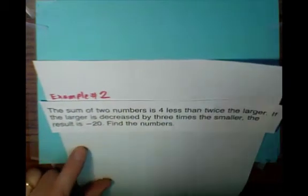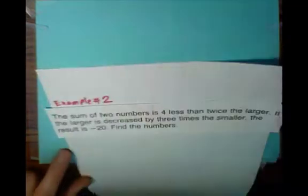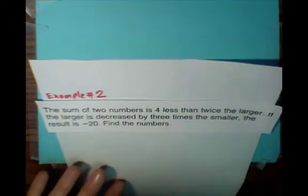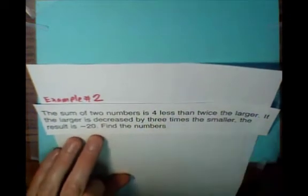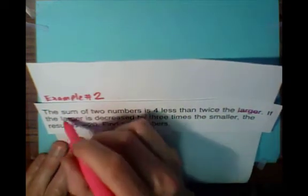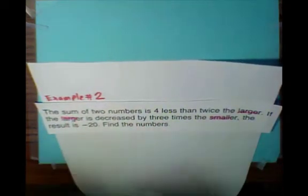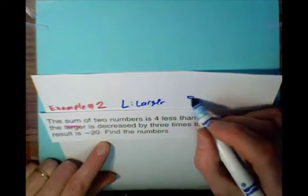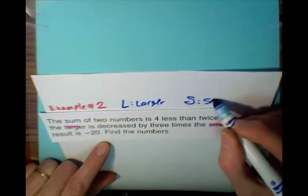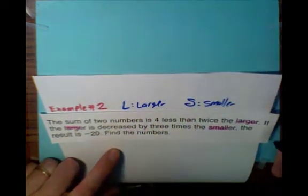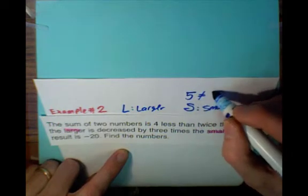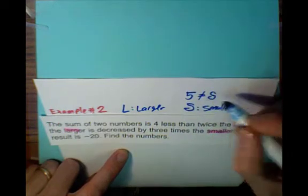We first have to identify the unknowns and write variables. Our unknowns are obviously the two numbers. Some people might be tempted to use x and y, but notice the wording — it talks about the larger and the smaller. So we'll use letters that make sense: L to represent the larger, and S to represent the smaller. Be careful that your letter S does not look like a 5.